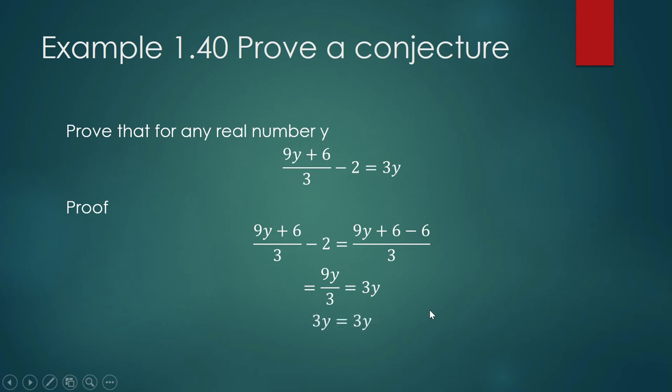We have shown that for any choice of real number y, the operations that is described in the procedure is going to give us 3 times y. Our conclusion is: given a number y, applying the procedure to y produces 3 times y.